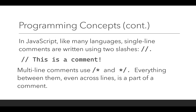In JavaScript, like many other programming languages, single-line comments are written using two slashes — slash, slash — then the comment, and it ends at the end of that line. The next line will be code.